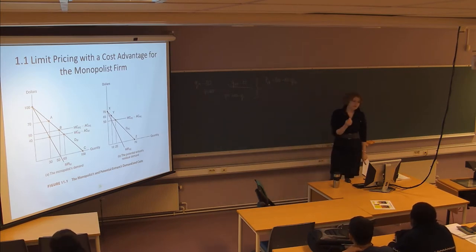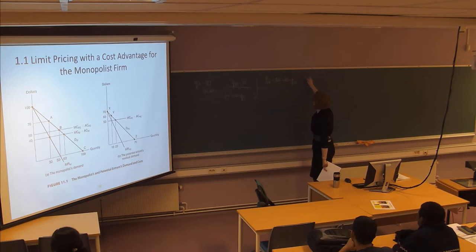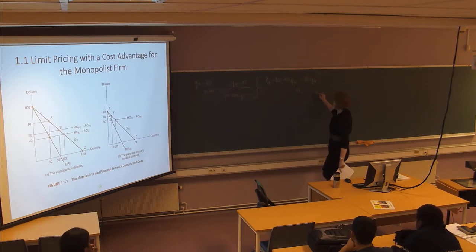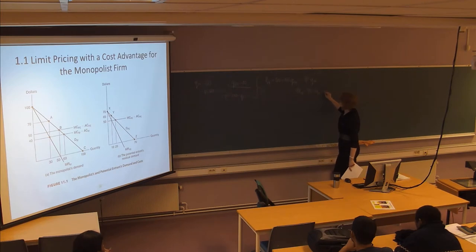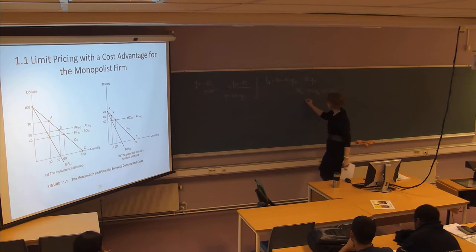Now it has a slightly different profit maximizing problem. We have 90 minus QM. We apply the twice-as-steep rule. The marginal revenue of the monopolist is equal to 90 minus 2QM, and is equal to 40 — that's marginal costs. This is 45.